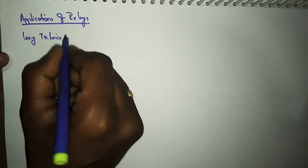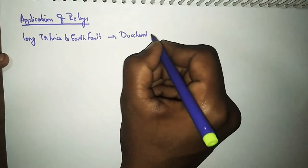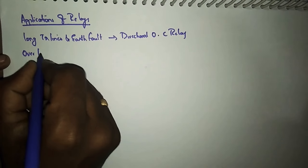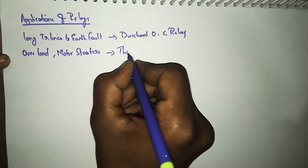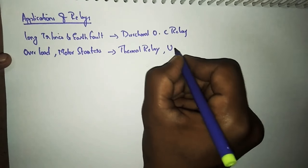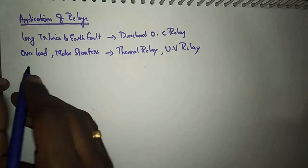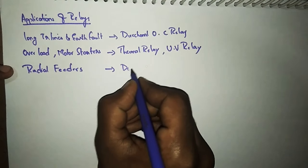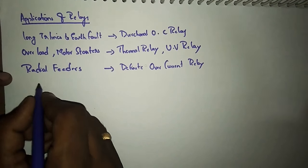For long transmission lines and at fault, we employ a directional overcurrent relay. For overloading and for motor starters, we employ a thermal relay or under-voltage relay. For radial feeders, we go for a definite overcurrent relay.